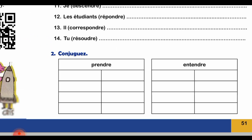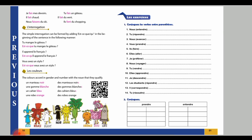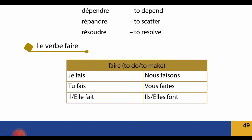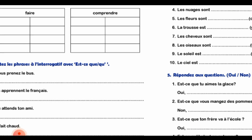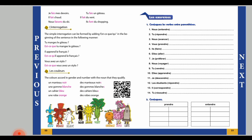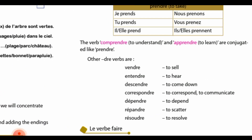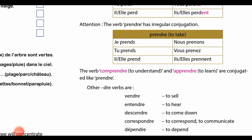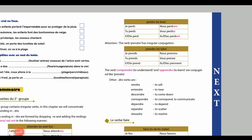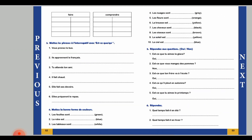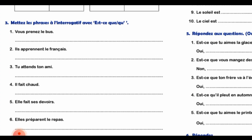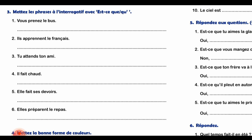अब आते हैं 'faire' verb पर - 'faire' की conjugation book में दे रखी है, तो वहाँ से आप लोग list out कर सकते हो। Then 'comprendre' verb - मैंने पहले भी 'comprendre' और 'apprendre' verb समझाई थी। जैसे 'prendre' verb conjugate होती है वैसे ही 'comprendre' verb को conjugate करना है, which is an irregular verb।